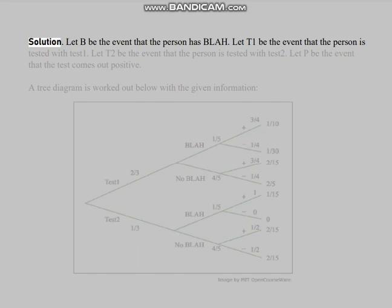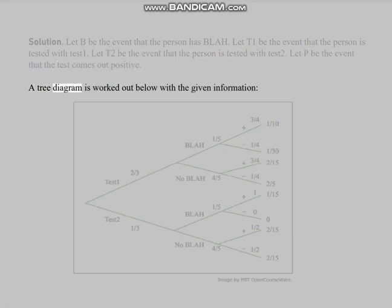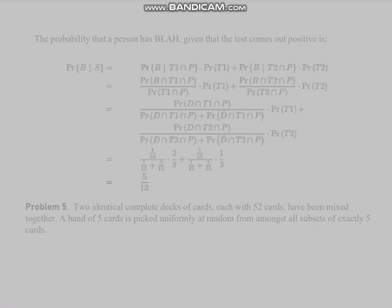Solution: Let B be the event that the person has the disease. Let T1 be the event that the person is tested with test 1. Let T2 be the event that the person is tested with test 2. Let P be the event that the test comes out positive. A tree diagram is worked out below with the given information. The probability that a person has the disease given that the test comes out positive is calculated.